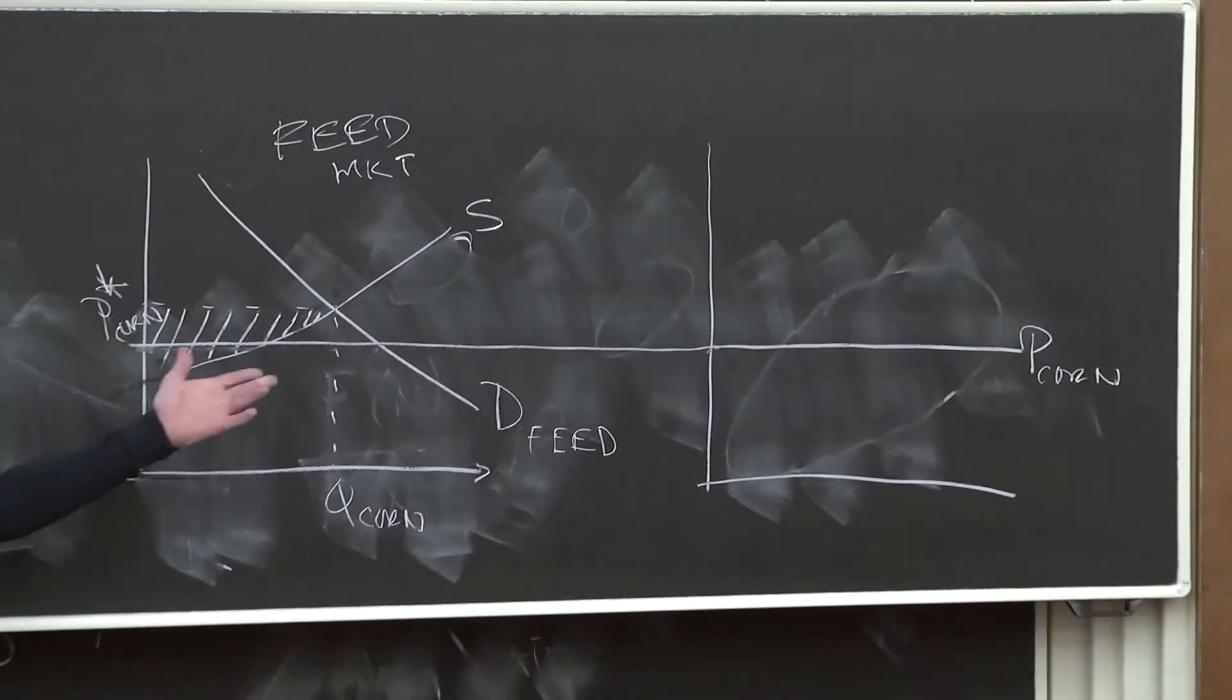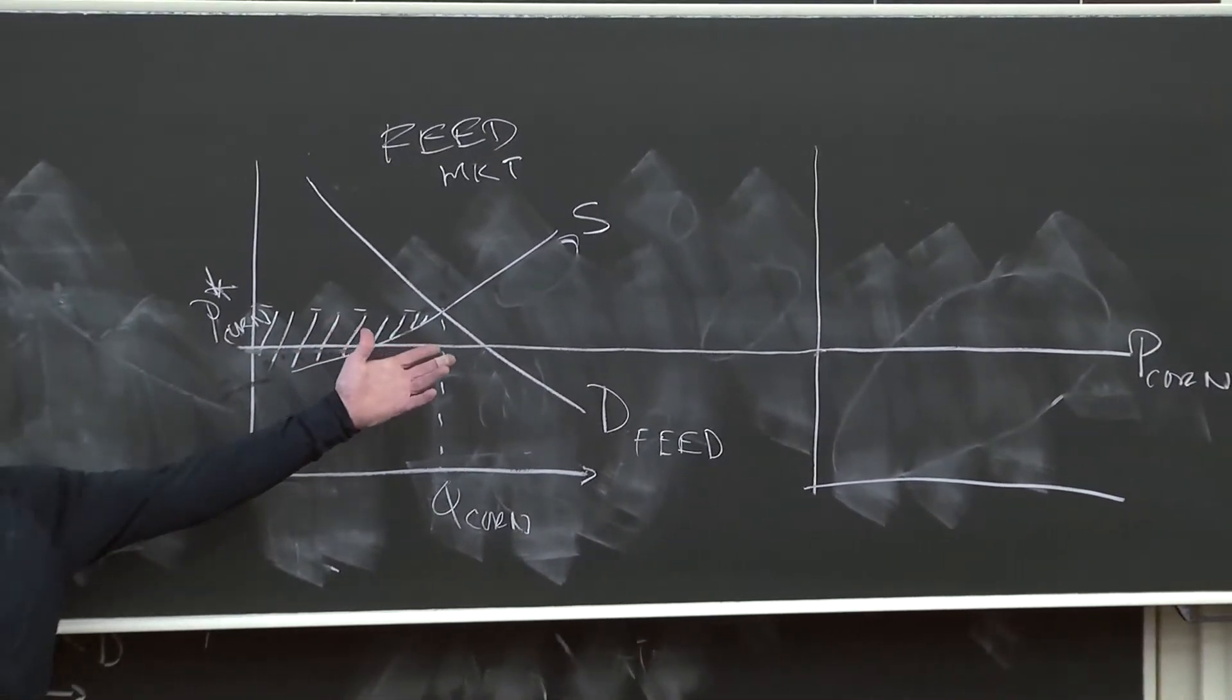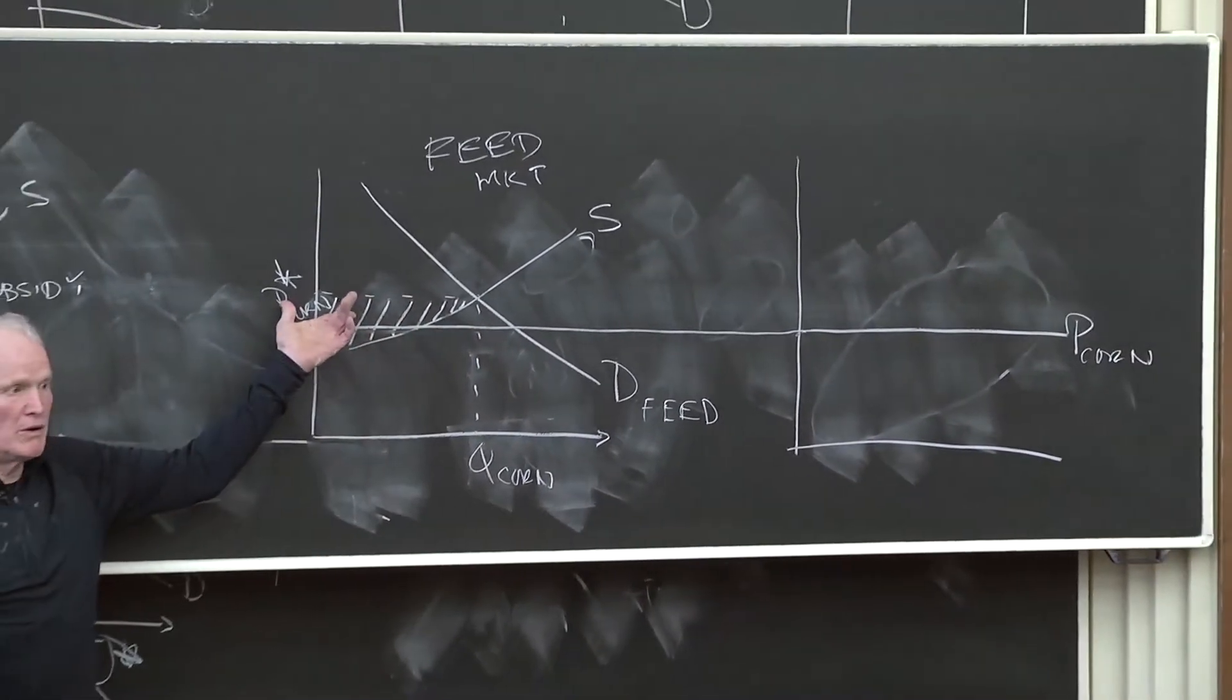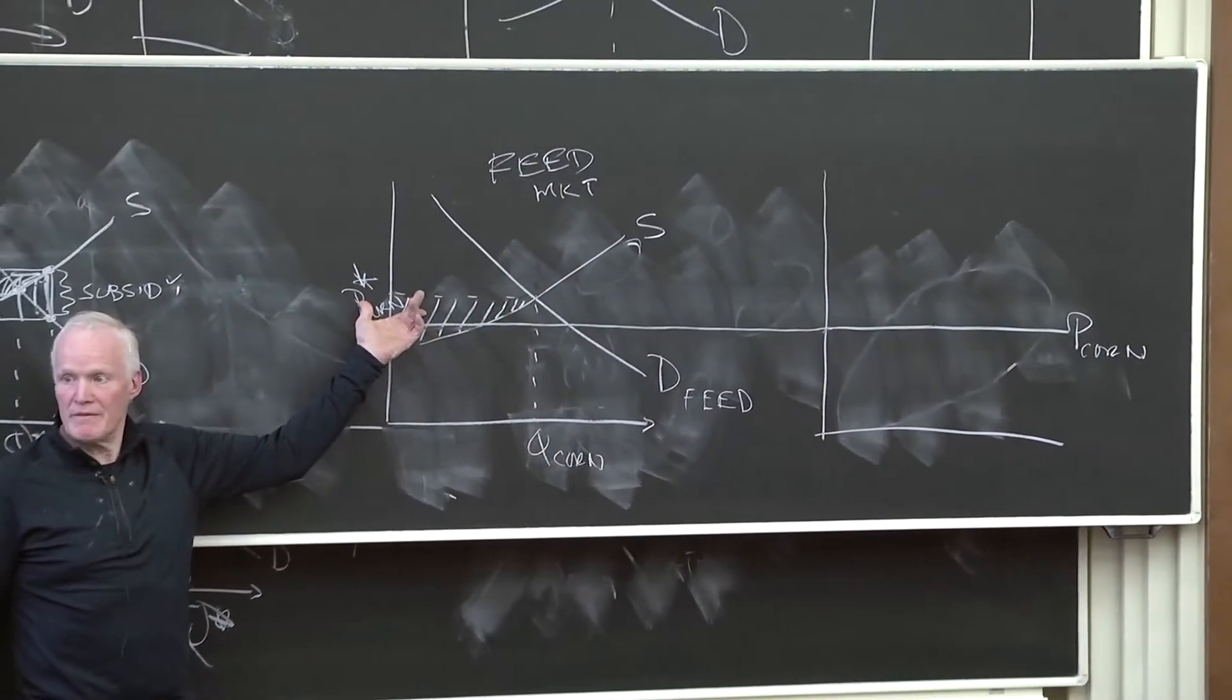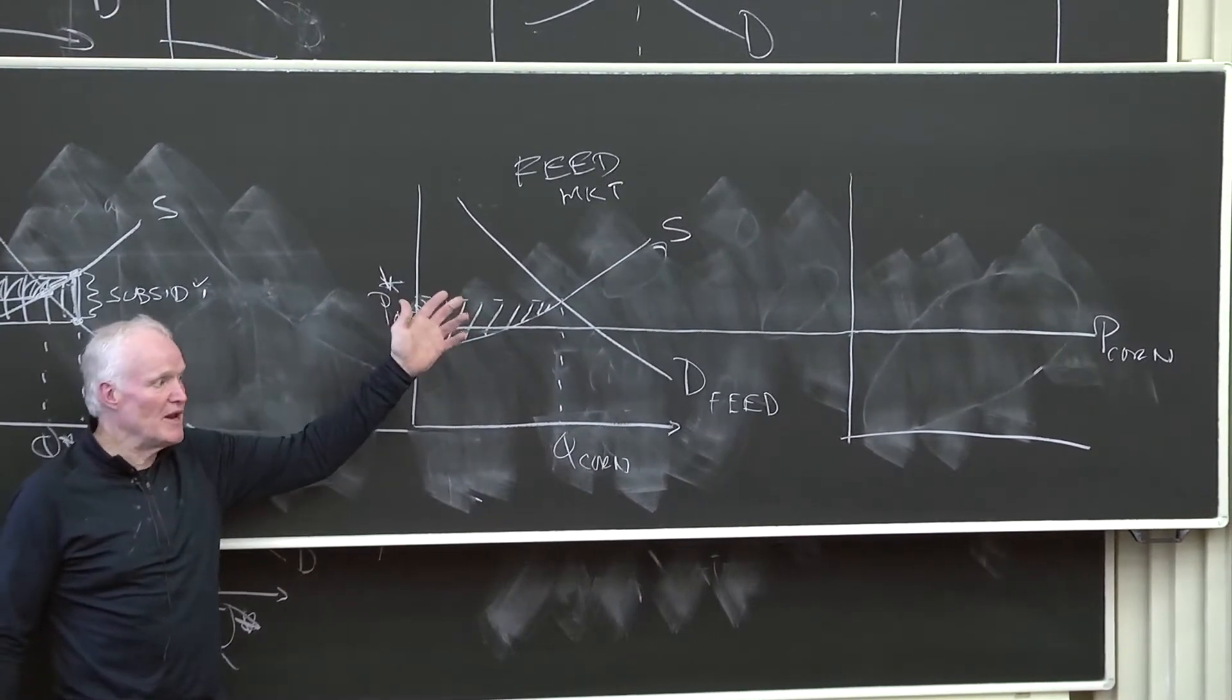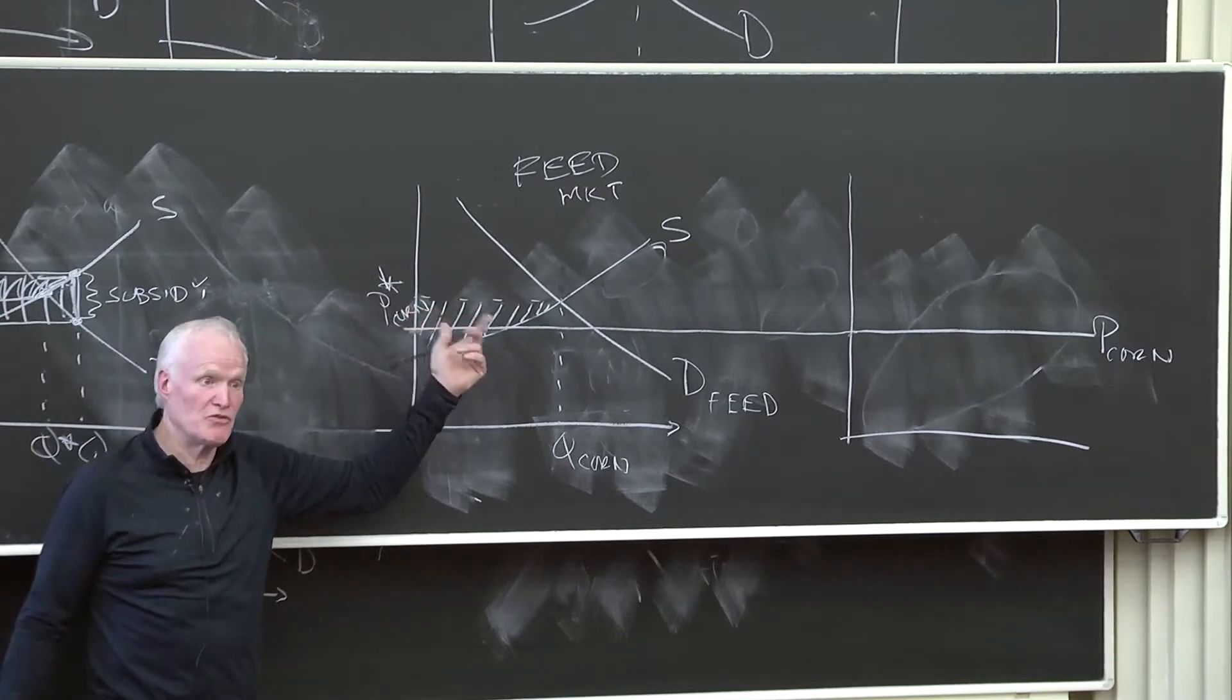That is, there's nobody making ethanol out of corn because the price they'd be willing to pay is too low to get any corn. This is the pre-subsidy world. Nobody's making ethanol out of corn, it's just not worth the effort. It's too costly.